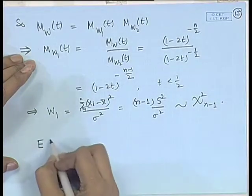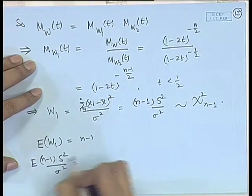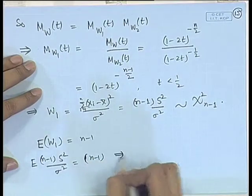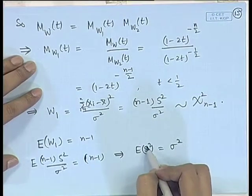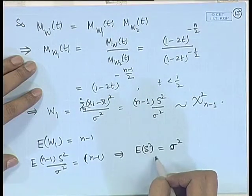We have established chi-square as a sampling distribution. In particular, if we look at E(w₁) it equals n−1, so E[(n−1)s²/σ²] = n−1, which means E(s²) = σ². So on average, s² = Σ(x_i − x̄)²/(n−1) is unbiased for σ², not divided by n. That is why we define sample variance with divisor n−1 — because it is an unbiased estimator for σ². In the inference course we will deal in detail about the criteria of unbiasedness for s².